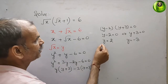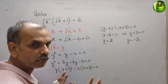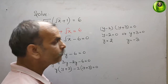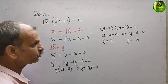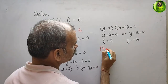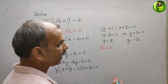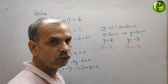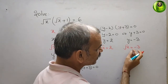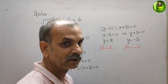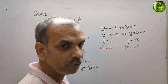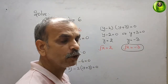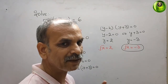But we want the answer in terms of x, and y = √x. So we have √x = 2 or √x = -3. We know that a square root cannot be negative, so we ignore √x = -3. Every negative value under a root should be rejected.